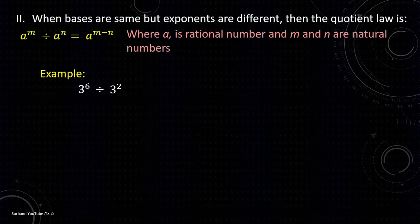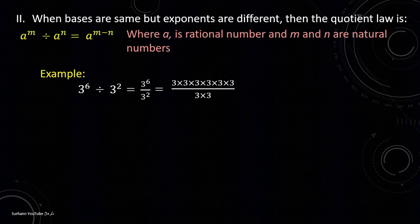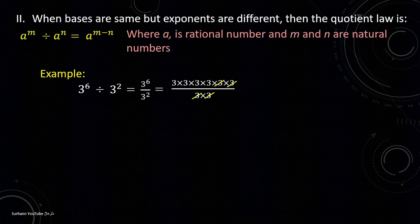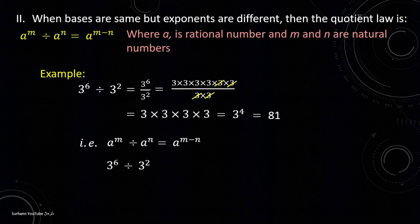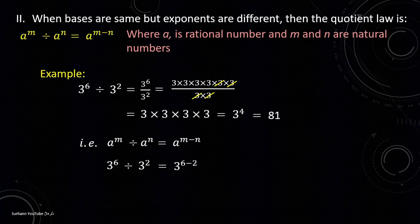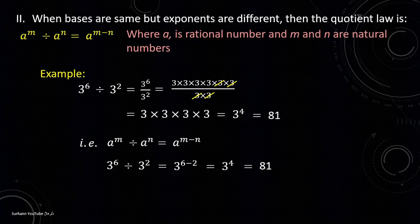To understand this more clearly, let us look at the following example. 3 to the power 6 divided by 3 to the power 2. Expanding it: 3 multiplied 6 times divided by 3 multiplied 2 times. We cancel the common factors, leaving 3 multiplied 4 times, giving an answer of 81. Using the formula, a is 3, m is 6, n is 2. Subtracting: 3 to the power (6 minus 2) equals 3 to the power 4, which is 81.